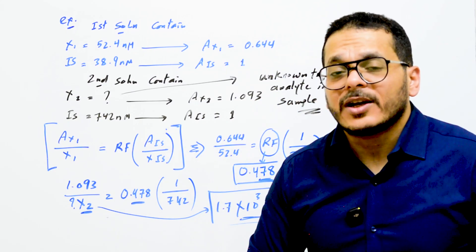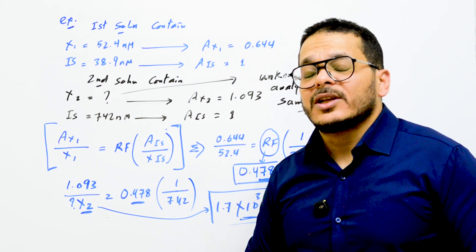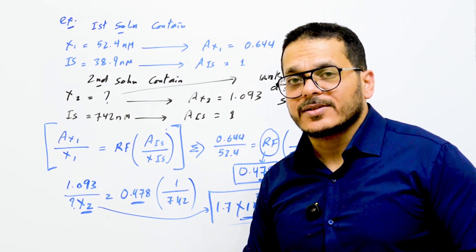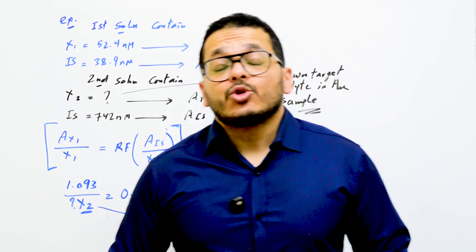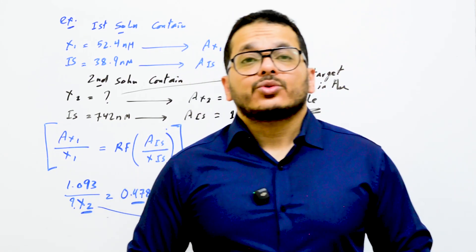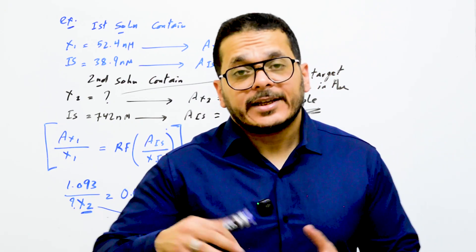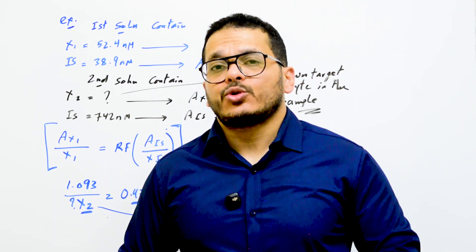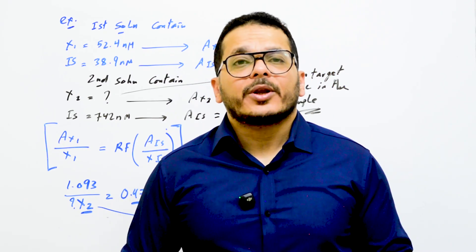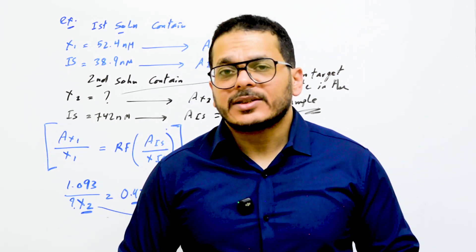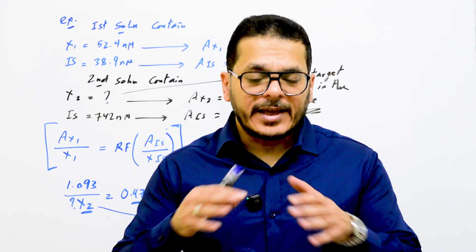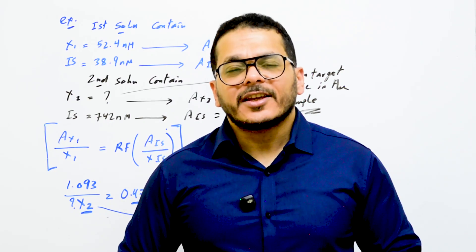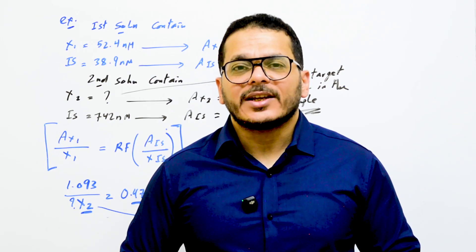Even during the instrument run, any effect on the internal standard will be the same on the analyte, so the response factor remains constant. That response factor is used to quantify the concentration of unknown target analytes. That was the end of our lecture for today. In the next lecture, I will explain the third solution — preparing a standard addition sample — which is the easiest way. Thank you and see you in the next lecture.